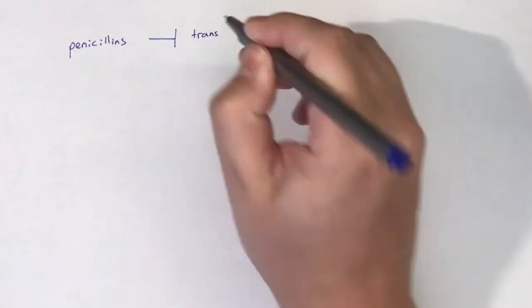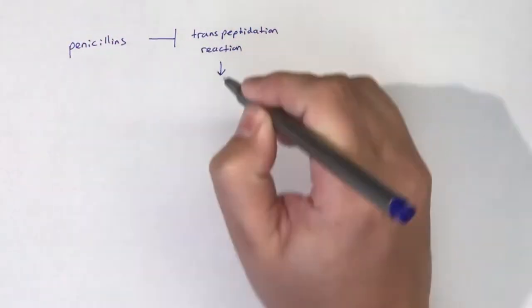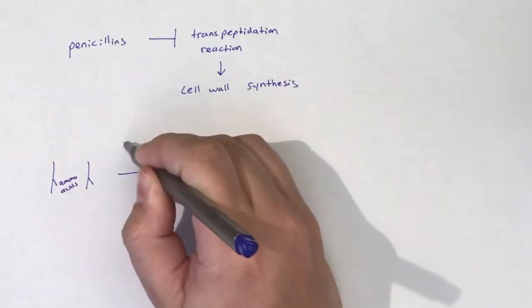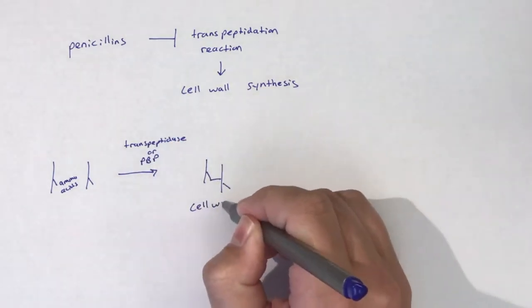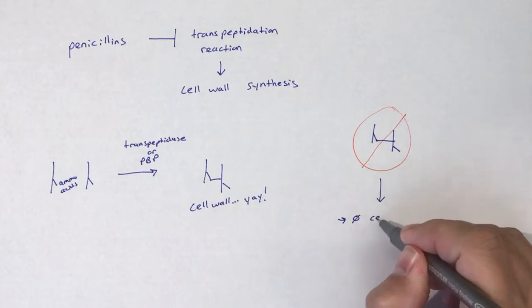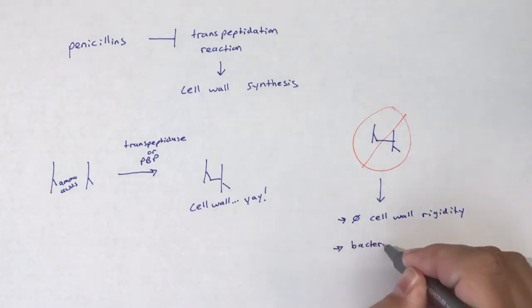You'll recall from the video on penicillins that penicillin G is a cell wall synthesis inhibitor. Penicillin G is a competitive inhibitor of transpeptidase. Furthermore, penicillin G is bactericidal. In order to find out more details, please watch the penicillin specific video.